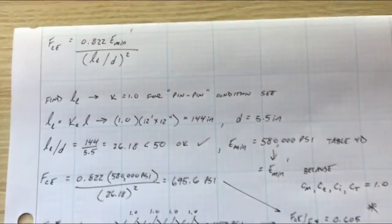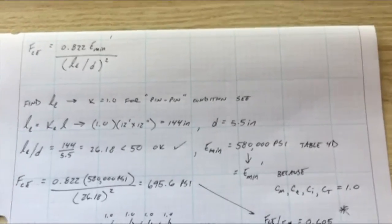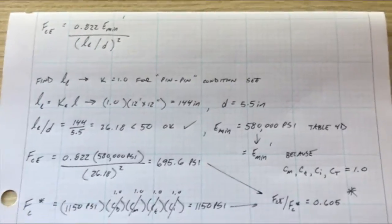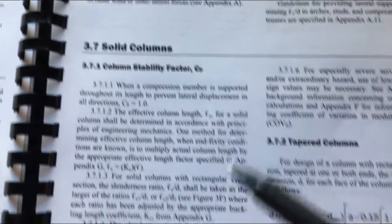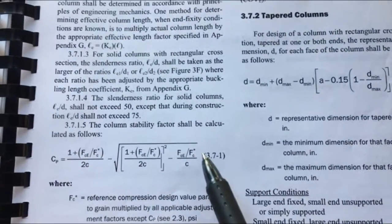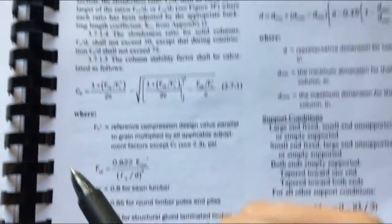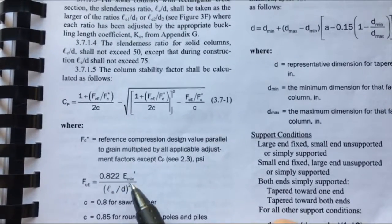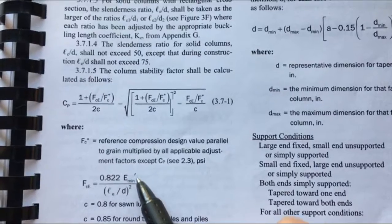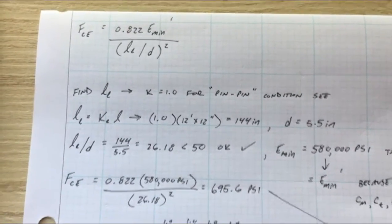All right so for CP, let me see if I can flip to it for us. CP is in section 3.7 for solid columns and that is defined by this big equation here. Yeah it's nasty. So first we need to find FCE with this equation and in order to do that we need a couple things. We need LE, we need E, E min prime.